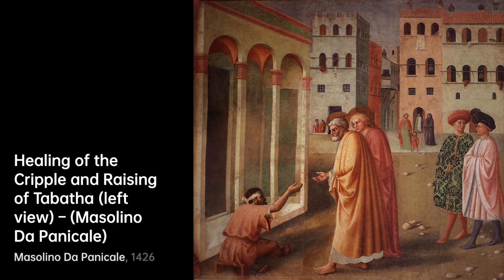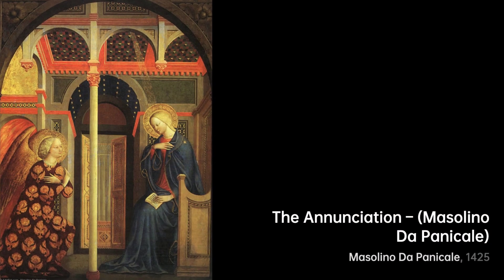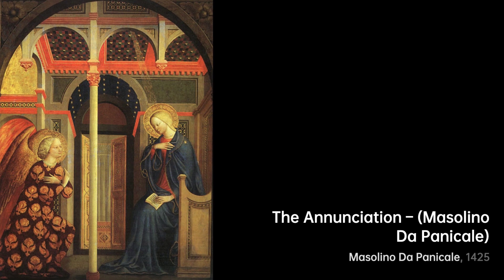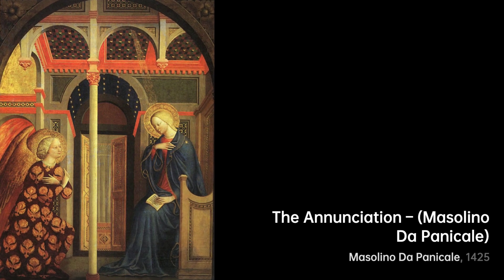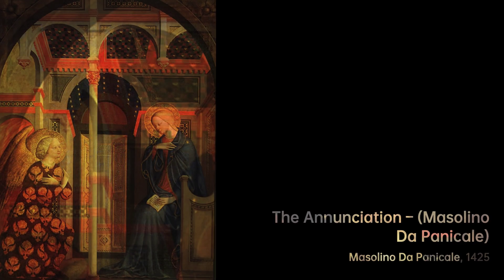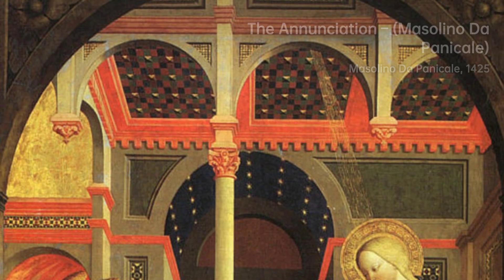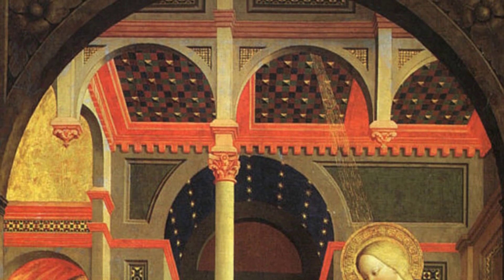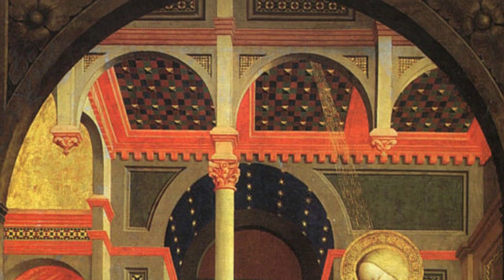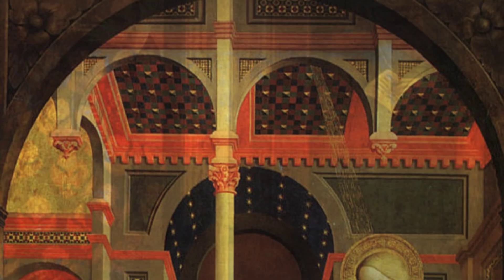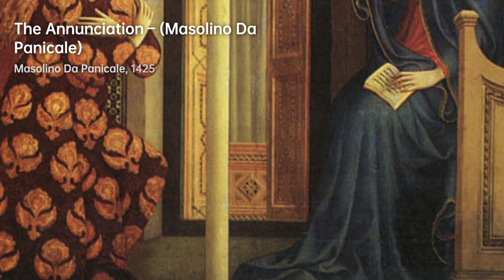Masolino di Panicale was possibly born in Panicale near Florence, and he may have been an assistant to Ghiberti in Florence between 1403 and 1407. He joined the Florentine guild Arte de Medici e Speziali in 1423, and he may have been the first artist to create oil paintings in the 1420s, rather than Jan van Eyck, as was previously thought.